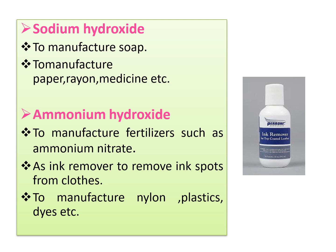Ammonium hydroxide is used as an ink remover to remove ink spots from clothes. Last use: to manufacture nylon, plastic, dyes, etc. These are the uses of ammonium hydroxide. We have now learned the uses of bases — sodium hydroxide, calcium hydroxide, and ammonium hydroxide.